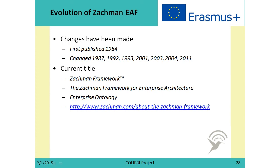It is important to know that these frameworks look different today compared to when they were first developed, as all frameworks are evolving. In your task, you will have an opportunity to follow how the Zachman Framework evolved — it changed in 1987, 1992, 1993, 2001, 2003, 2004, and 2011. Currently it carries the trademark of Zachman's Framework, has a new name — Zachman Framework for Enterprise Architecture — and is also called Enterprise Ontology. In the link below, you can learn more about this framework.